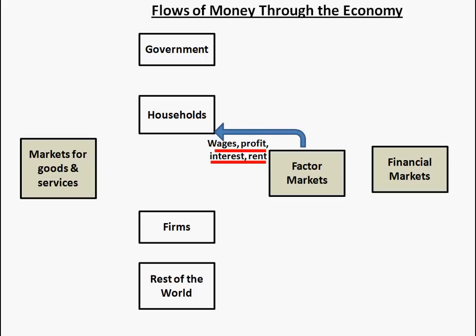We see that households are paid wages, profit, interest, and rent from the factor markets. Ultimately, that money goes directly to individuals.